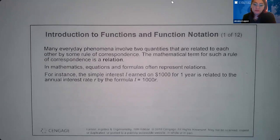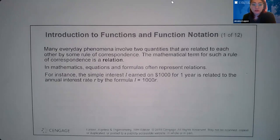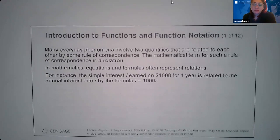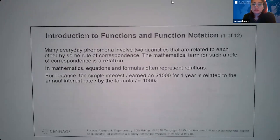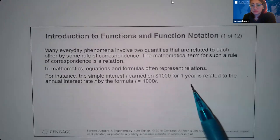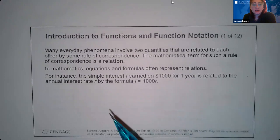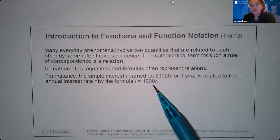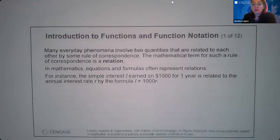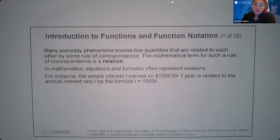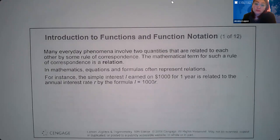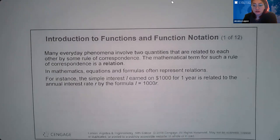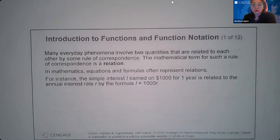Many everyday phenomena involve two quantities that are related to each other by some rule of correspondence. The mathematical term for such a rule of correspondence is a relation. In mathematics, equations and formulas often represent relations. For instance, the simple interest I earned on $1,000 for one year is related to the annual interest rate by the formula I = 1,000 × R. When talking about relations, you're talking about multiplication, division, addition, subtraction, exponents, and radicals applied — something is happening to the numbers that creates the relationship between the two variables.